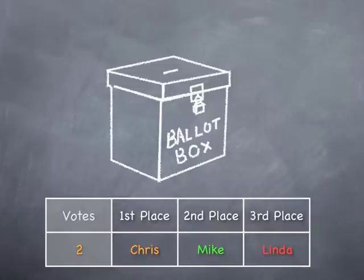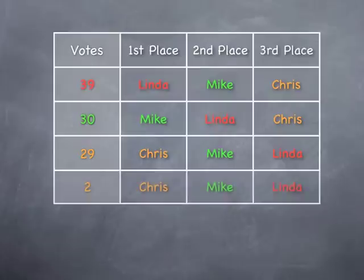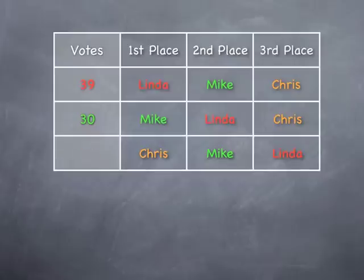So let's go ahead and put those two ballots in. If you take a look, you can see now we have 31 votes for Chris — those are the two additional ballots for Chris with Mike second and Linda in third place. Can you see who the winner is going to be with the instant runoff voting algorithm?